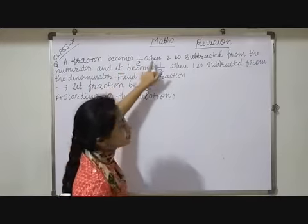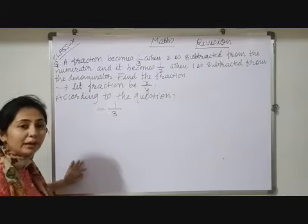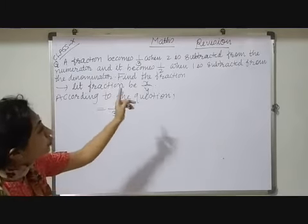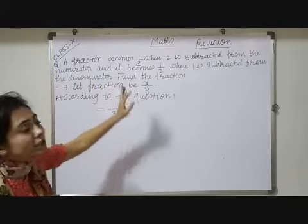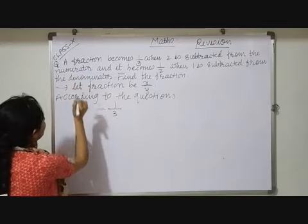A fraction becomes 1 by 3. So fraction becomes 1 by 3, that is, equals 1 by 3 when 2 is subtracted from the denominator. So when 2 is subtracted, sorry, from the numerator.